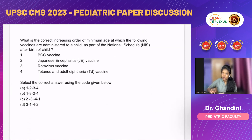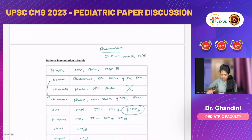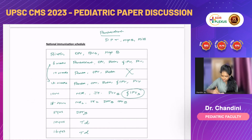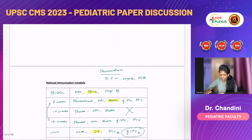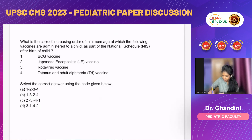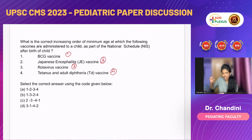Next question: what is the correct increasing order of minimum age at which the following vaccines are administered per the National Immunization Schedule — BCG, Japanese Encephalitis, Rotavirus, and TD? According to the schedule, BCG comes first, then Rotavirus, then JE vaccine, then TD vaccine. So the correct order is BCG, Rotavirus, Japanese Encephalitis, TD — that is 1, 3, 2, and 4. The correct answer is option B.